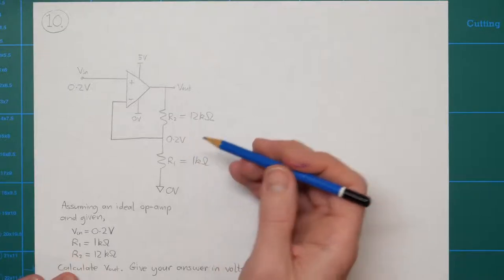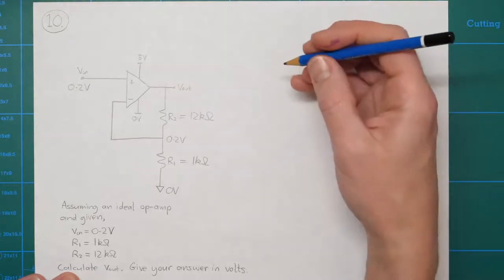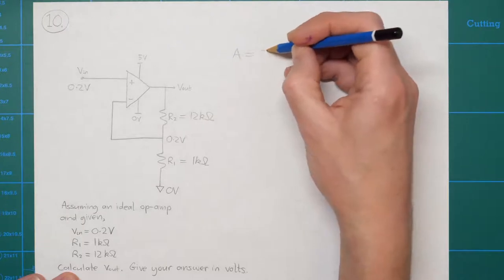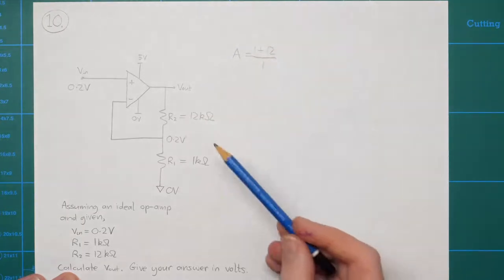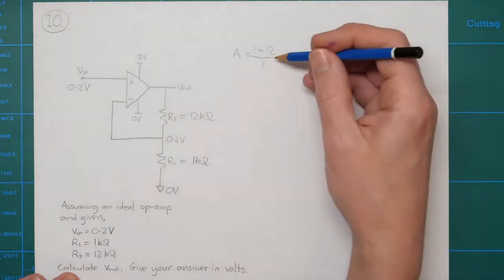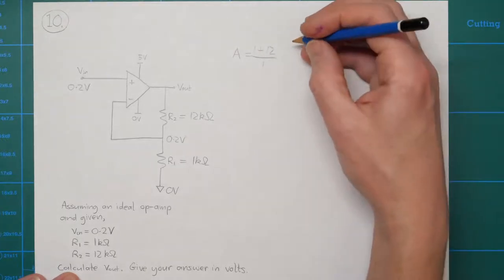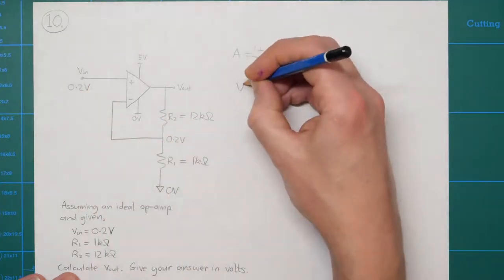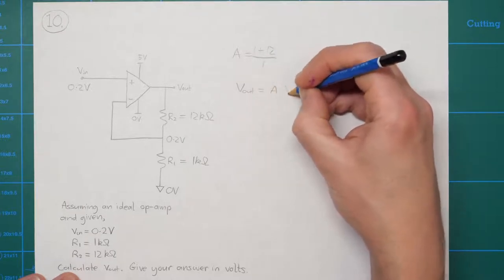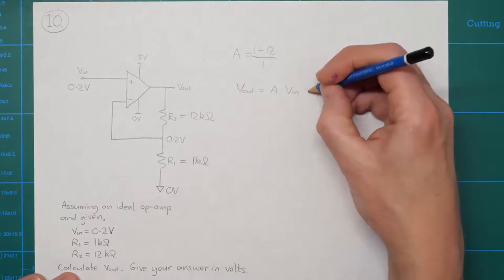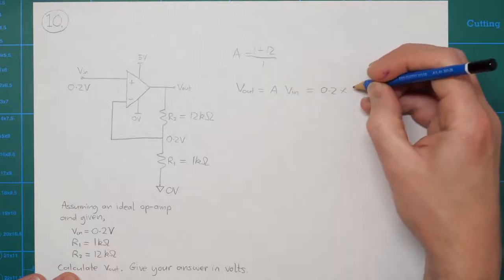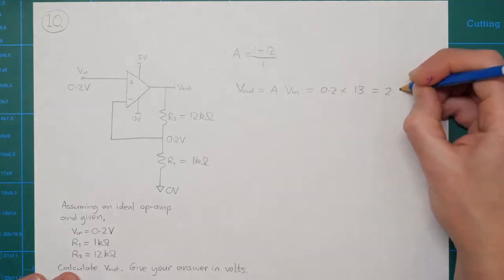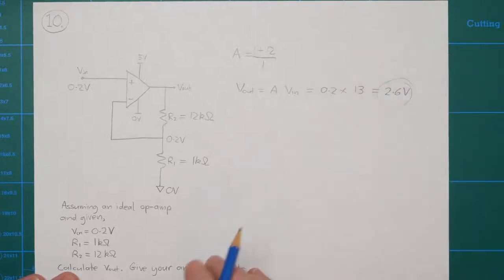Assuming the op-amp doesn't saturate, let's calculate the output voltage. The gain A equals 1 plus R2 over R1, which is 1 plus 12 over 1 — the same result whether you use kilohms or ohms. So the gain is 13. Vout equals A times Vin, so 0.2 multiplied by 13 gives us 2.6 volts. That's our result.